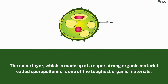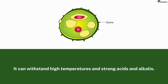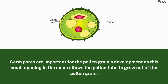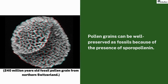The exine layer is made up of a super-strong organic material called sporopollenin, which is one of the toughest organic materials known. This material is so tough that it can withstand high temperatures and strong acids and alkalis. The exine also has special little holes called germ pores, which are important for the pollen grain's development — it is a region of the exine where sporopollenin is absent, and this small opening allows the pollen tube to grow out of the pollen grain. One really cool thing about pollen grains is that they can be well preserved as fossils because of the presence of sporopollenin.